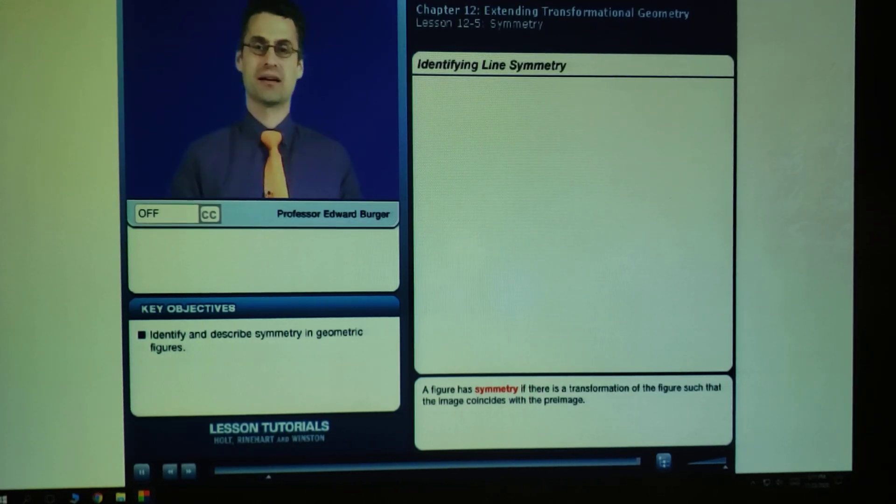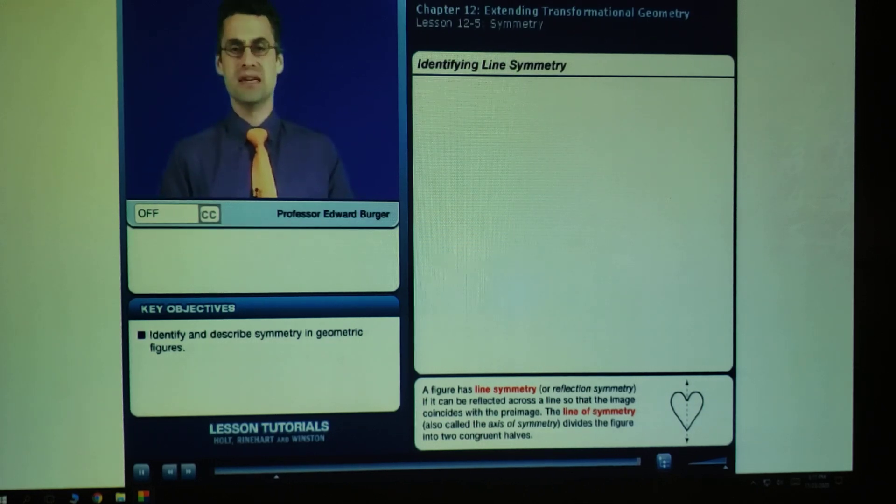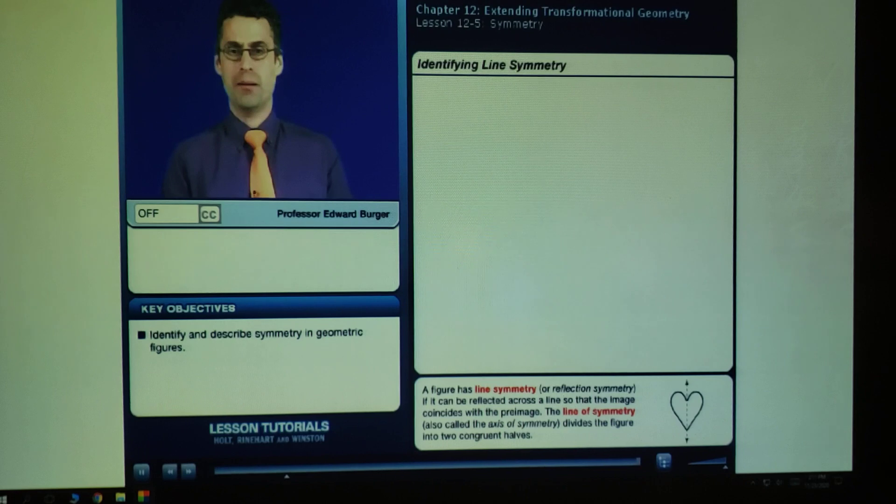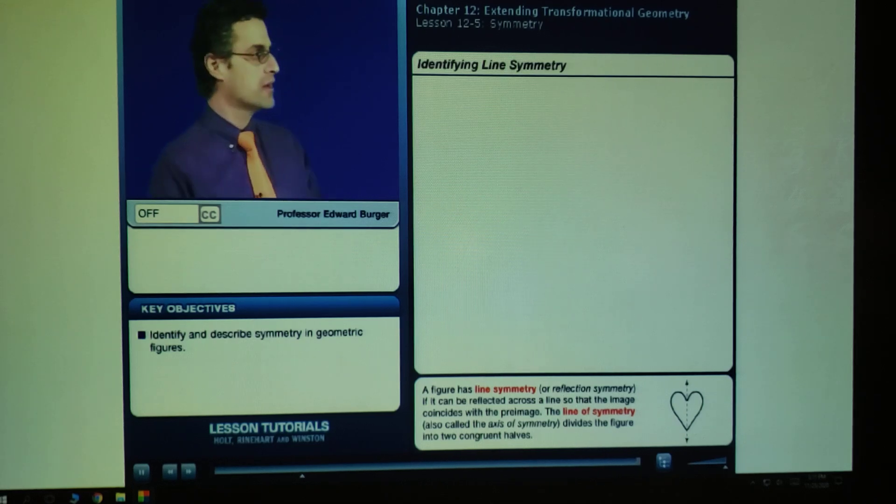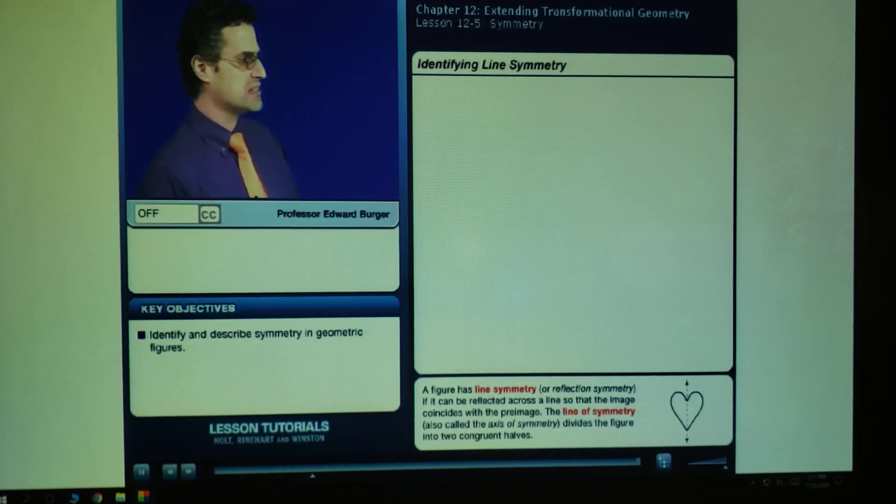Let's start off by talking about line symmetry. Line symmetry means that we have some kind of line upon which, if you reflect an object, it actually lands right on top of itself. So it actually coincides with itself. Let's take a look at some figures and tell whether each figure has line symmetry.